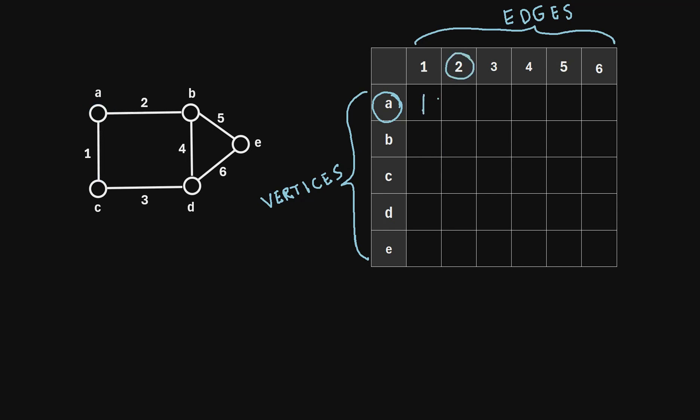Then we move on to edge number 2, so we'll say, is vertex A incident with edge 2? And we can see that indeed it is in the graph. Edge 2 is connected to vertex A. So in this box, we're also going to write a 1.